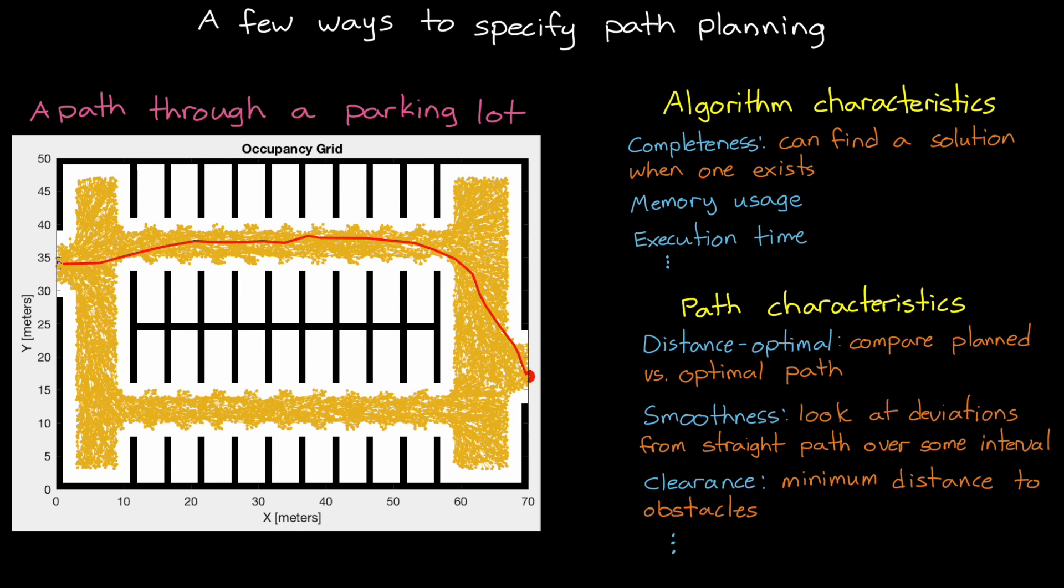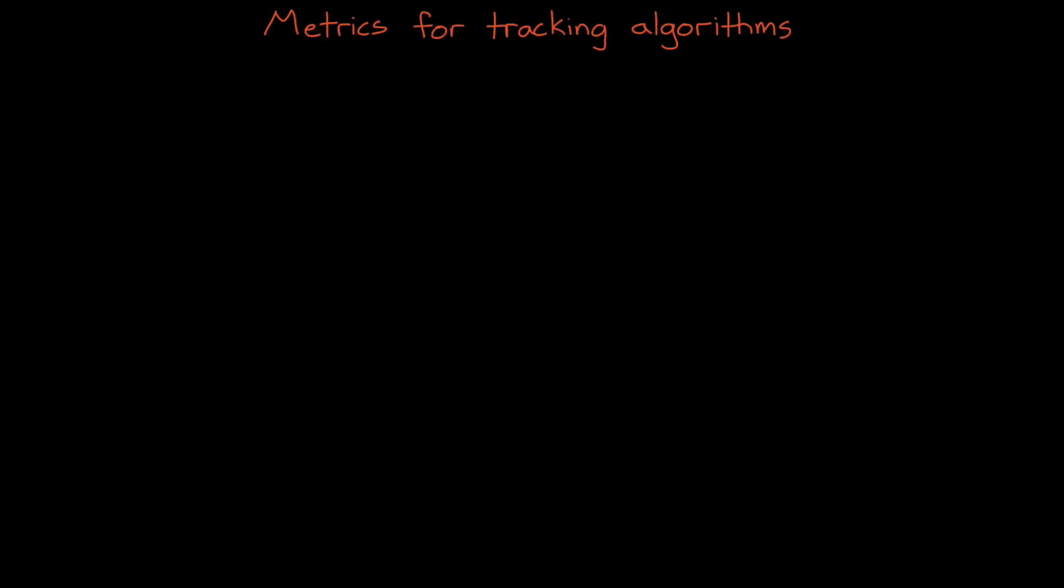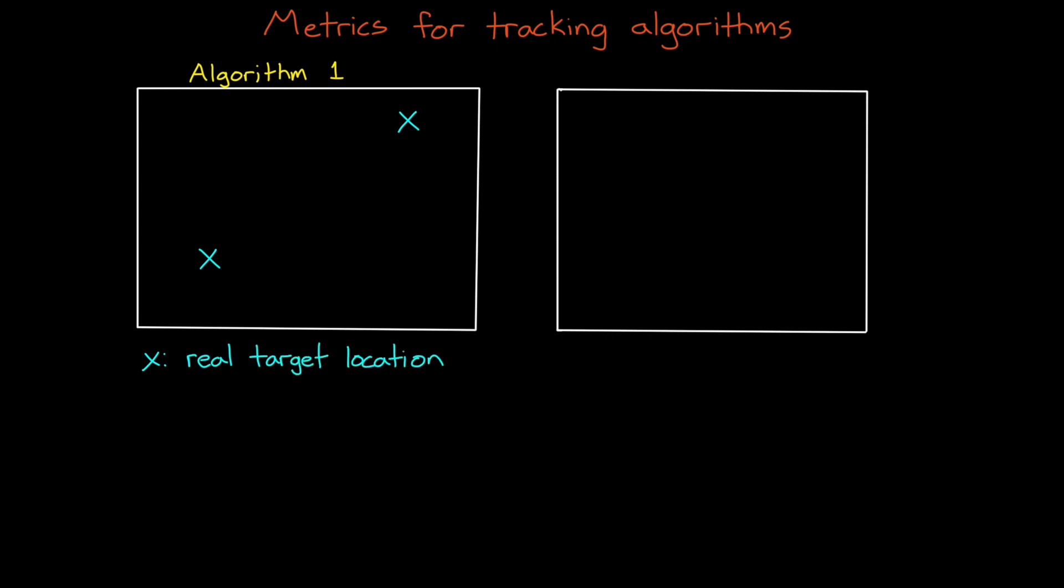And there's tons of other metrics that we may want to define and verify as well. But for now, let's move beyond path planning and look quickly at possible metrics for tracking algorithms. To begin, I want to present two hypothetical tracking situations. In the first, let's say there are two real targets within the local environment that we should be tracking. I'll mark them as X's on this 2D plane. One tracking algorithm comes back with three estimated target tracks, indicated with circles.